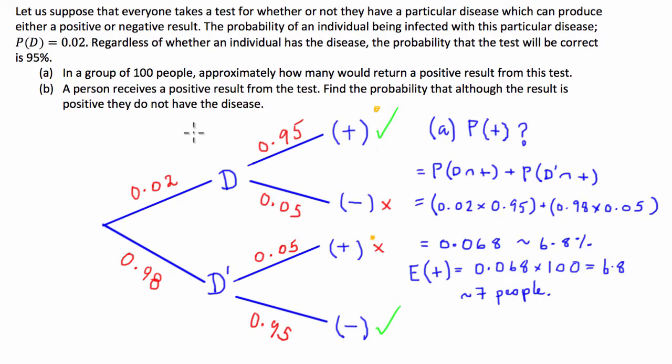Let's see if we can find some space for part B. Part B, a person receives a positive result from the test. Find the probability that although the result is positive, they do not have the disease. So this is what we're asked to find here, is the probability that they do not have the disease given a positive test result. Hopefully from your given probabilities you understand that this is going to be the probability that they do not have the disease and a positive divided by the probability that it is positive.